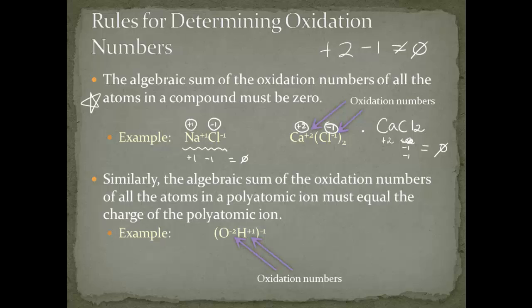Similarly, the algebraic sum of all the oxidation numbers in a polyatomic ion must equal the charge of the ion. For instance, in the hydroxide ion (OH⁻), the oxidation numbers of oxygen and hydrogen must equal -1. Oxygen is -2 and hydrogen is +1, and since we have one of each, -2 + 1 = -1, which equals the charge on the ion.